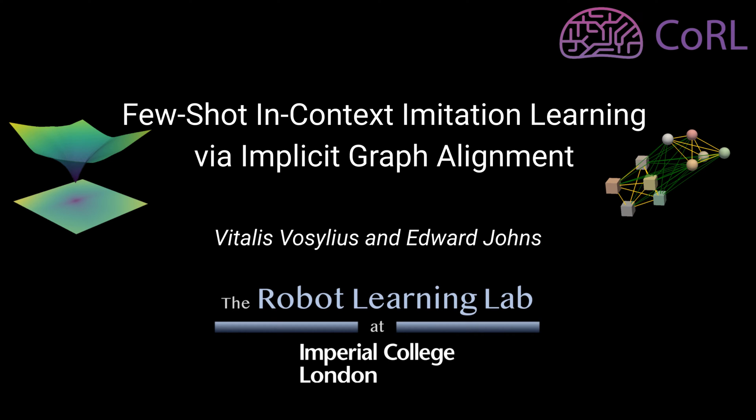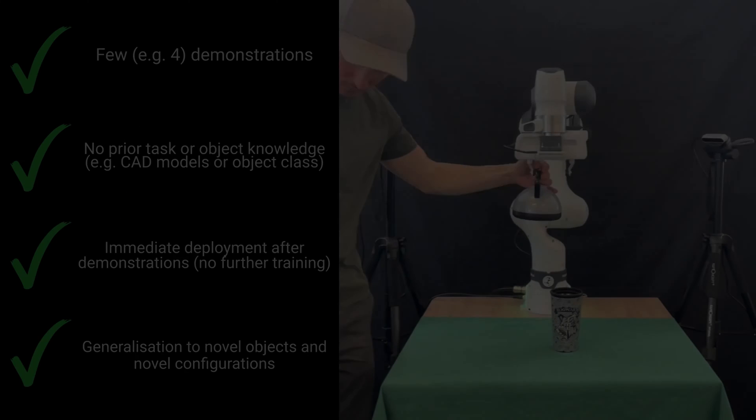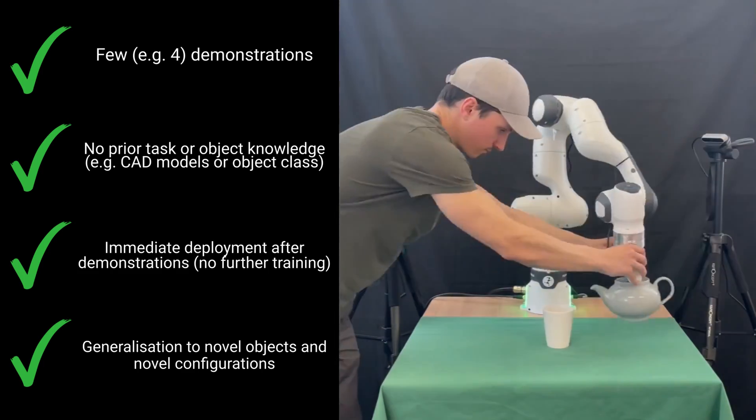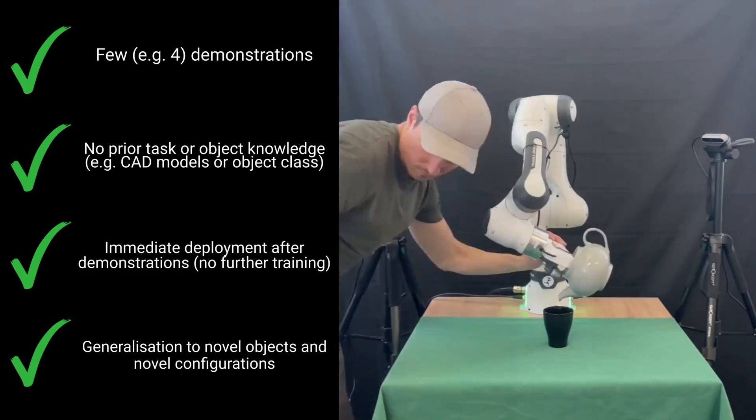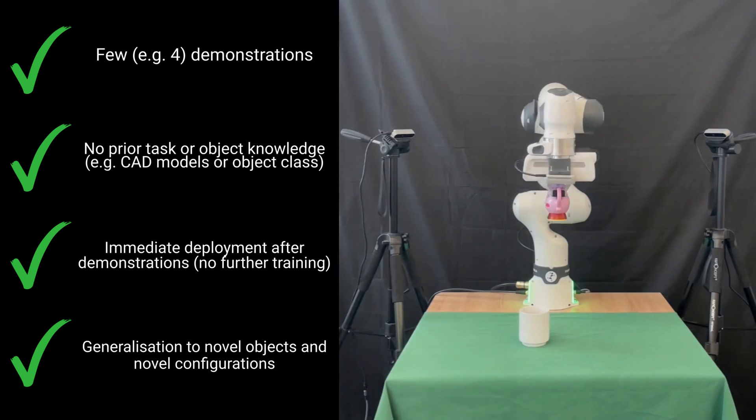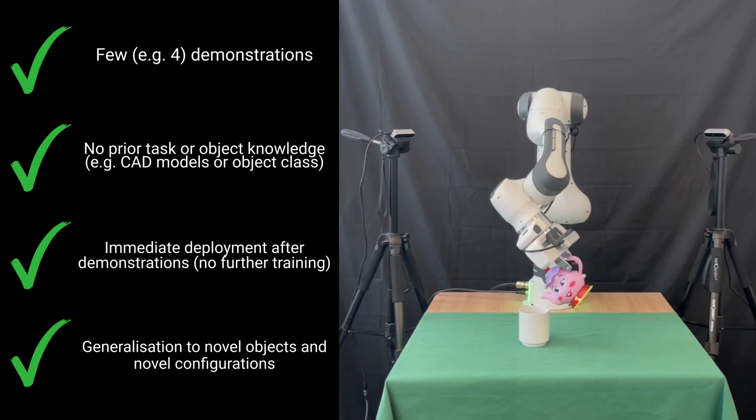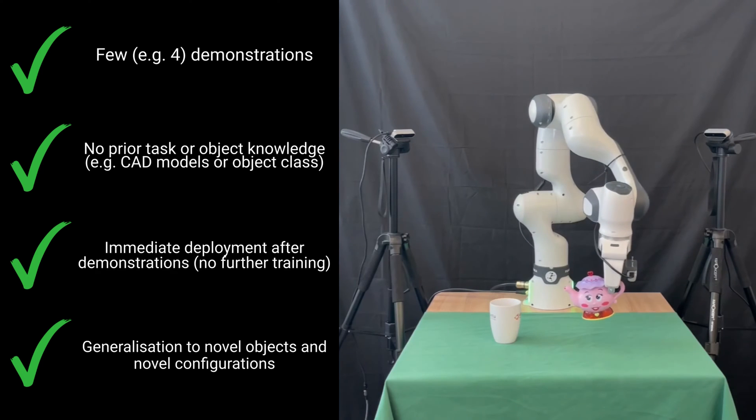We present implicit graph alignment, a framework which we use to tackle few-shot imitation learning problem, where the goal is for the robot to complete everyday tasks with novel objects immediately after just a few demonstrations, and do so without any prior knowledge about these objects or further training.